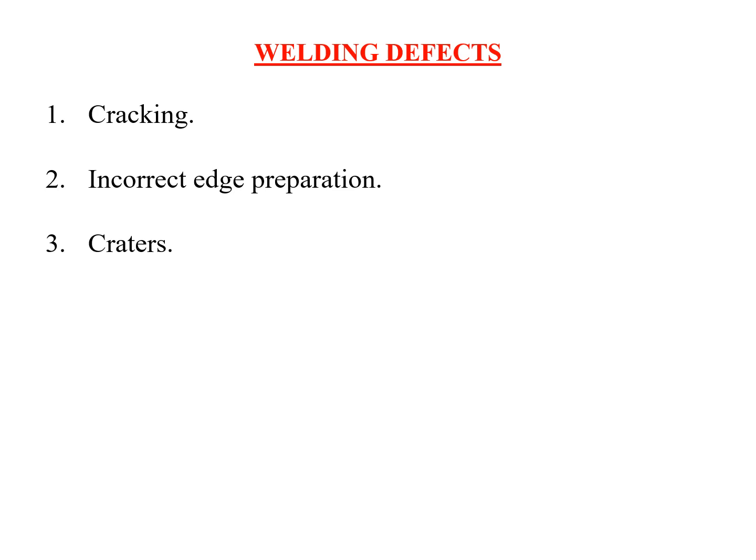The third defect is called a crater — these are concave depressions in the external surface of the welded joint, which reduce the volume of the weld and thus reduce the strength of the joint. The fourth defect is undercutting, which is excess melting of the parent metal. When the temperature is too high and the metal melts more than wanted, the strength of the component is reduced.